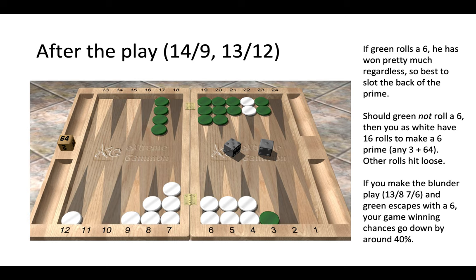Why are we taking that risk as white to give green a direct six to hit us? Well, here we need to think—if green rolls a six, he has won pretty much regardless. In that case, it's better to slot the back of the prime. We have an anchor in his home board, so even if we are hit by a six, we can still play a holding game, unless we get doubled out. The advantage of us slotting the back of the prime is if green doesn't roll a six. Green is not a favorite to roll a six—only 11 in 36 rolls are a direct six.